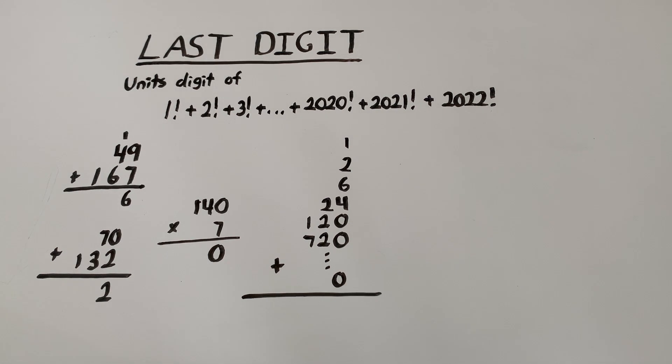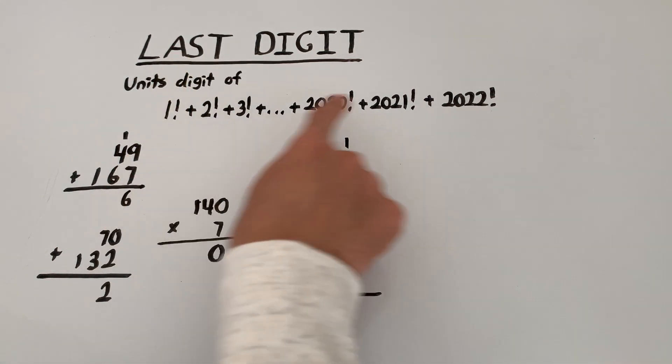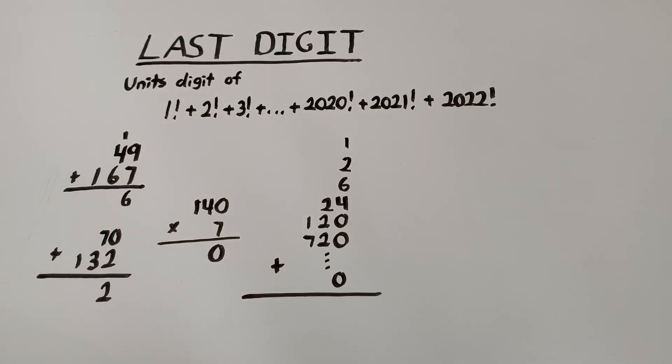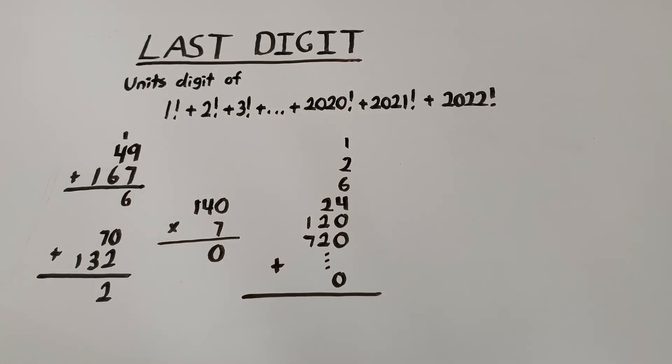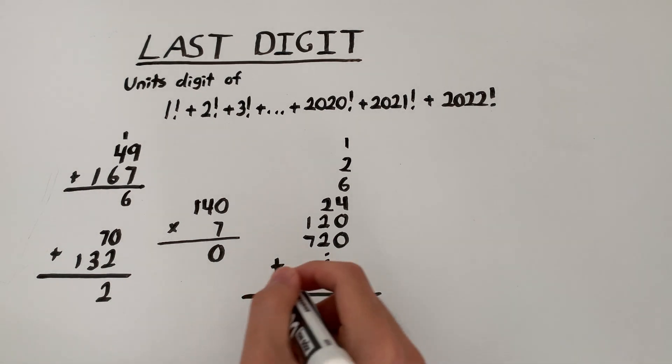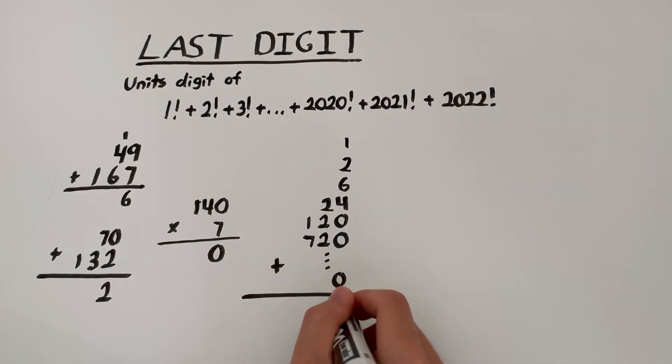This means that the units digit of all of this right over here is equal to 1 plus 2 plus 6 plus 4. 1 plus 2 is 3. 3 plus 6, that's 9. 9 plus 4, that is 13. So 3 goes there. The 1 is going to carry, but we don't care about the 1 because all we care about is the units digit. So the units digit of this entire sum is going to be 3.